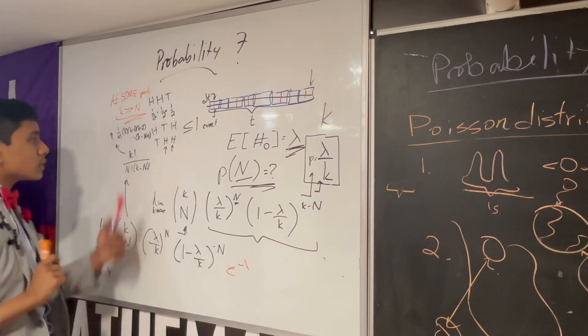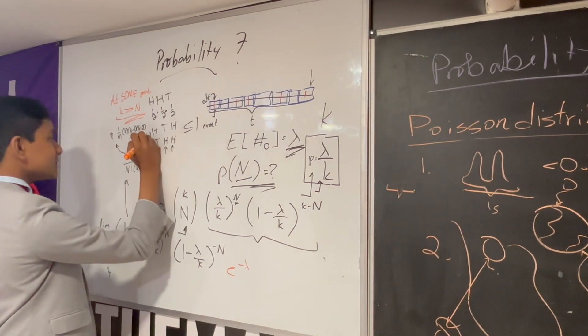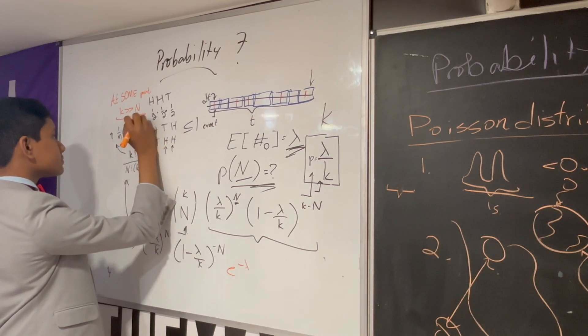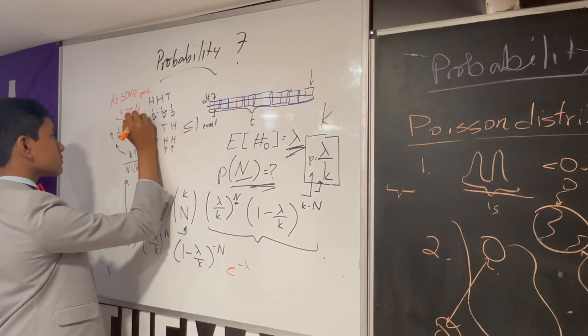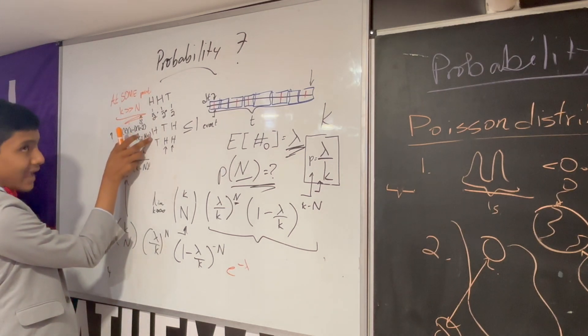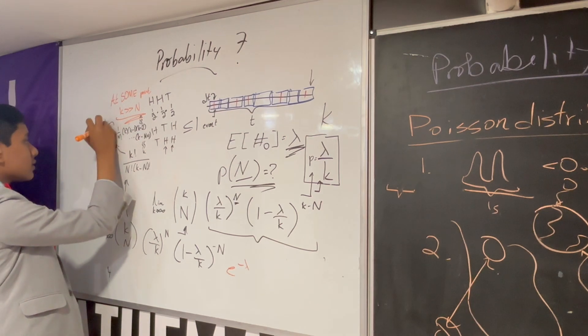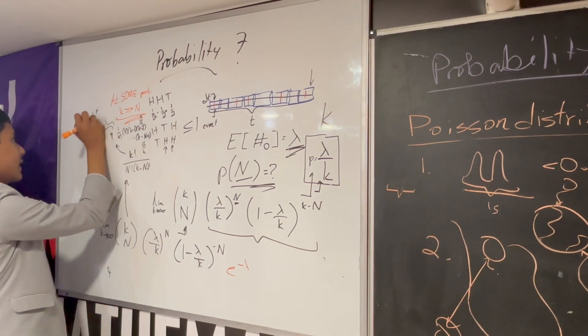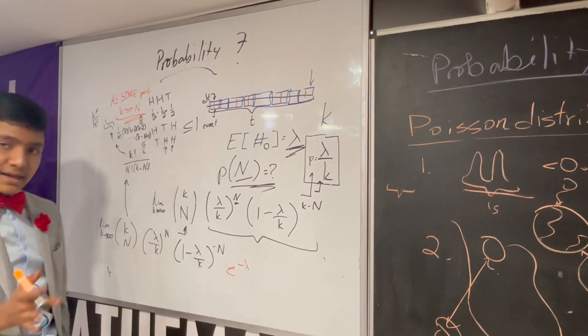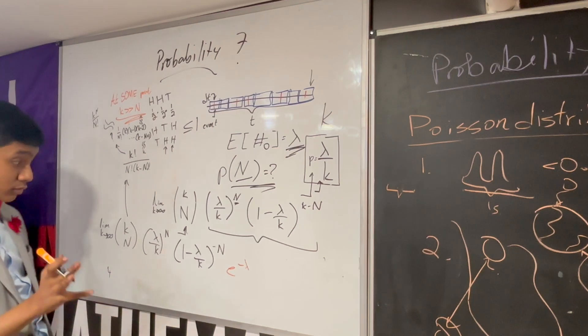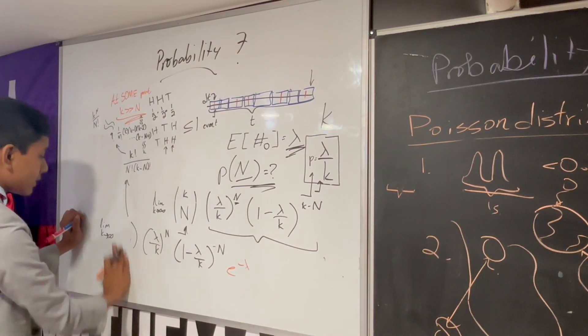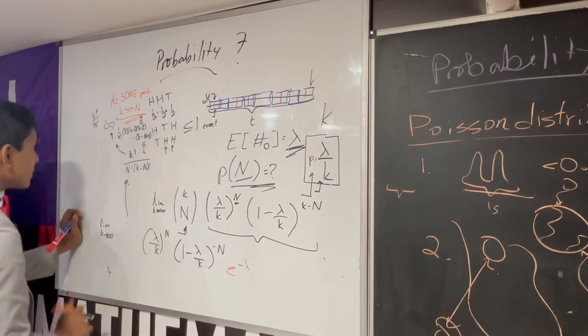Which means that this is going to become 1 over n factorial times k factorial over k minus n factorial. And, this is where the approximation comes in. That is just k times k minus 1 times k minus 2 all the way to k minus n plus 1. And, if k is much greater than n, k minus n plus 1 is very close to k. And, so are all of those other terms. Which means that there are n terms here. This approximately works like k to the n over n factorial as k approaches infinity. Which means that you can transform this into that.